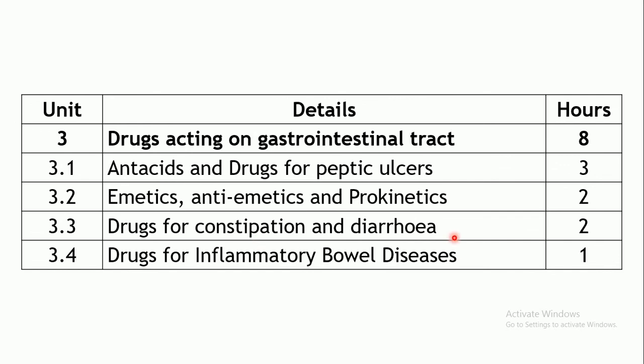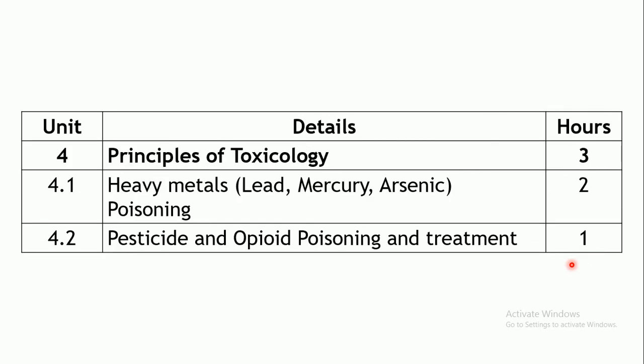The next chapter covers drugs for constipation and diarrhea, where GI motility may be affected. Two hours are allotted. The final chapter in this unit covers drugs for inflammatory bowel diseases — ulcerative colitis and Crohn's disease — with one hour allotted.